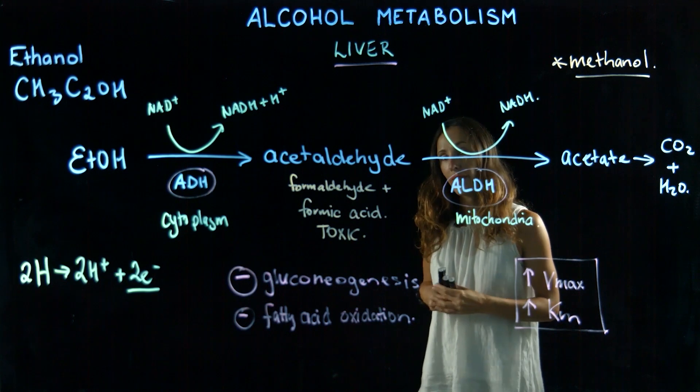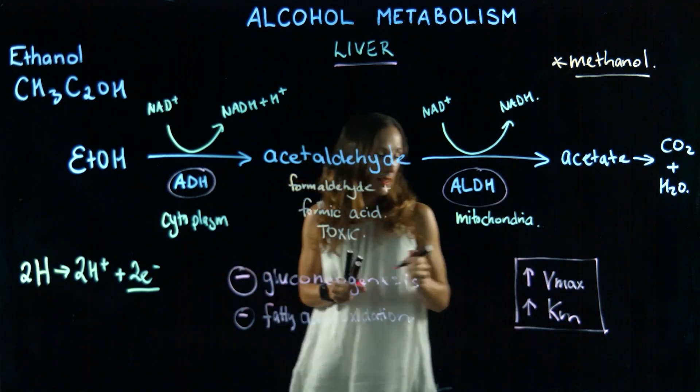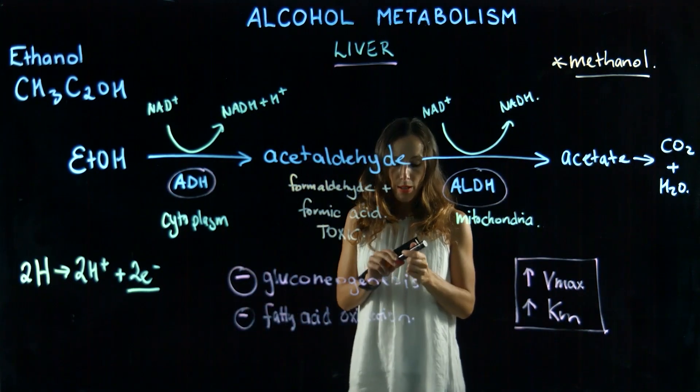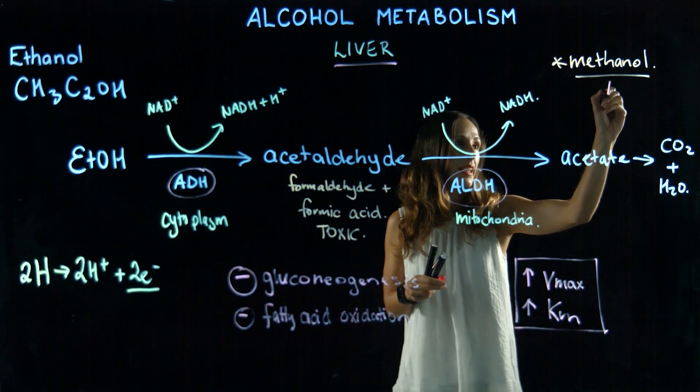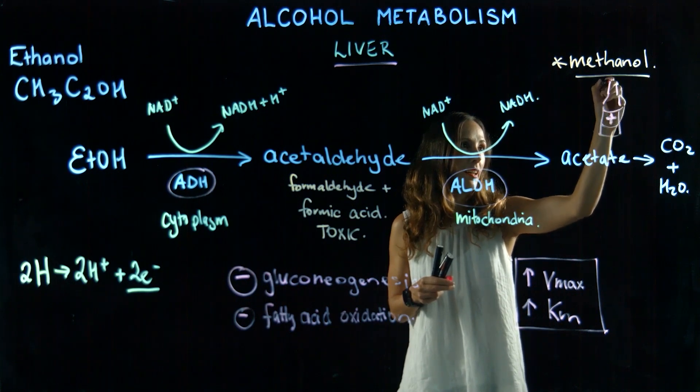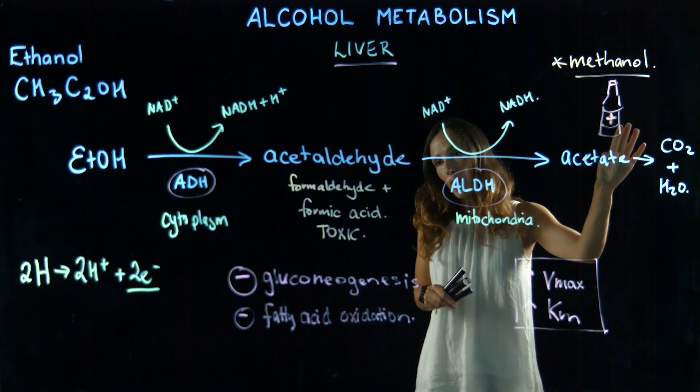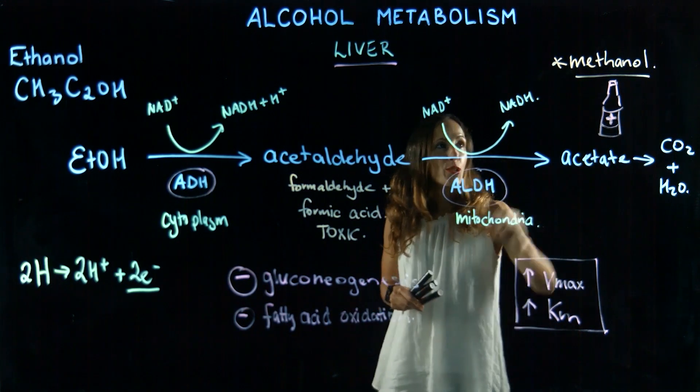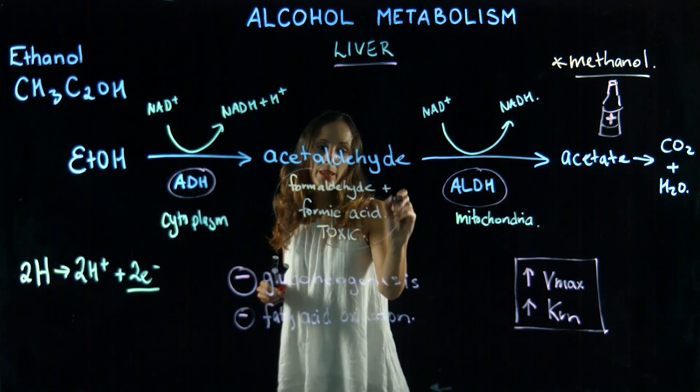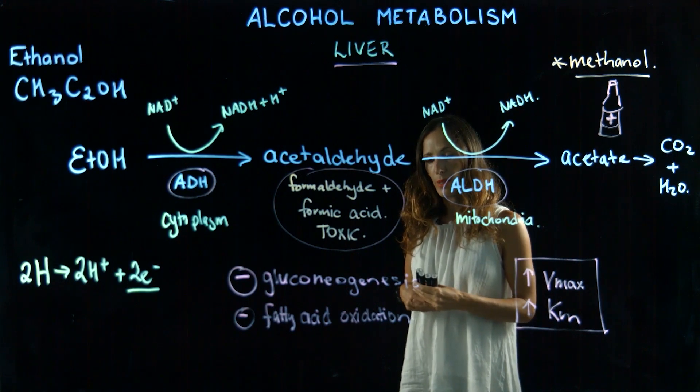Interestingly, if someone has had methanol poisoning and it's recognized early, the enzyme binds better to ethanol than it does to methanol. What is normally given as a treatment here is actually ethanol. It's not given in that form, but we can actually give limited doses of ethanol as a therapeutic treatment to methanol poisoning. We can control the rate at which these toxic products are being produced in the body to reduce the poisoning that occurs as a result.